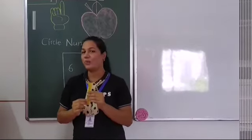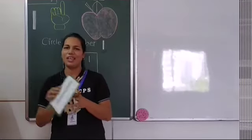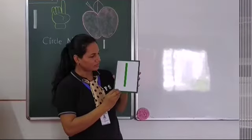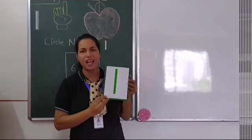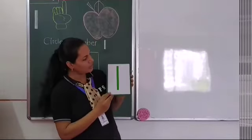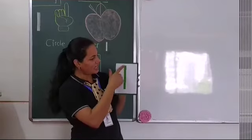Okay children. Now I will show you flash card. Okay? What is this? This is a standing line. Oh standing line. So number 1 ki tarah dikhta hai. Hai na? Kaise hai? Standing line?